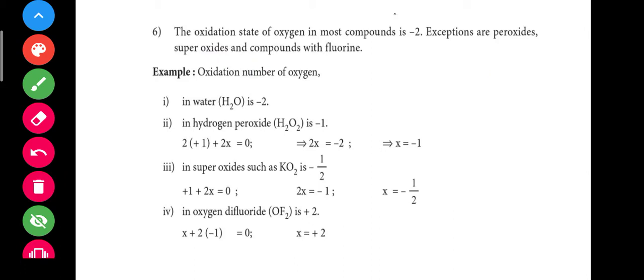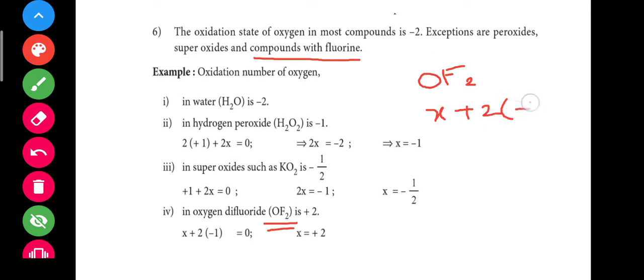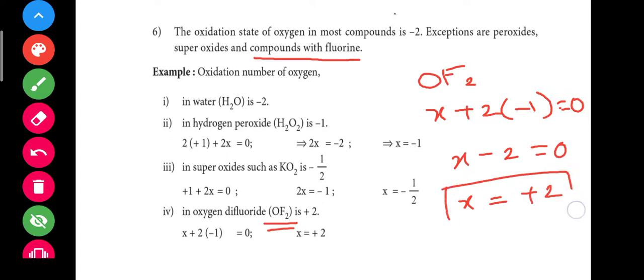For oxygen difluoride OF2, which is a compound of oxygen with fluorine: since fluorine is always minus 1, we write 1 into x plus 2 into minus 1 equals 0. So the oxidation state of oxygen in OF2 is plus 2, not minus 2. This is the exception rule for oxygen in fluorine compounds.